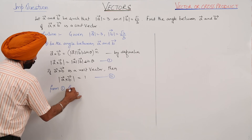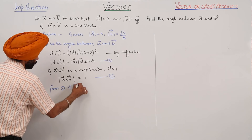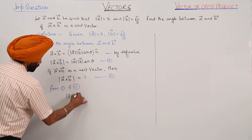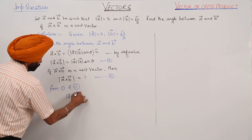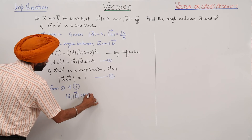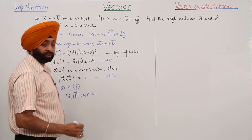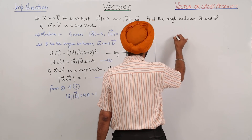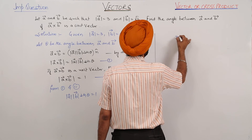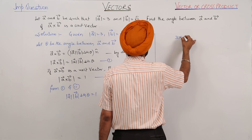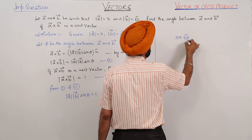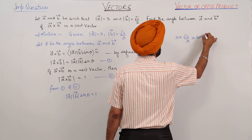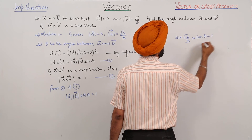Now, combining these results: magnitude of vector A times magnitude of vector B times sin theta is equal to 1. Putting in the values for the magnitudes, we have 3 times square root of 2 upon 3, times sin theta, is equal to 1.